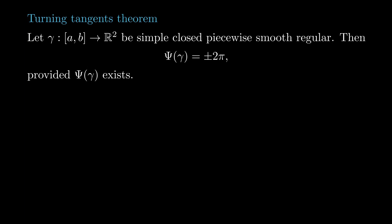A very important result about total signed curvature is the theorem of turning tangents. It says that for a simple closed piecewise smooth regular curve, its total signed curvature is either 2π or minus 2π.